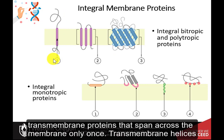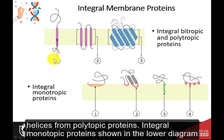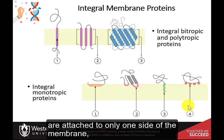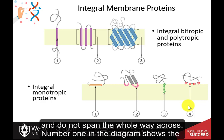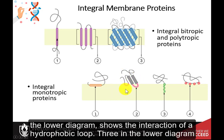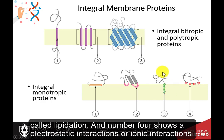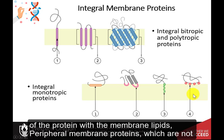Bitopic proteins are transmembrane proteins that span across the membrane only once. Transmembrane helices from these proteins have significantly different amino acid distributions compared to polytopic proteins. Integral monotopic proteins are attached to only one side of the membrane and do not span the whole way across. Their interactions include amphipathic alpha helices parallel to the membrane plane, hydrophobic loops, covalently bound membrane lipids (lipidation), and electrostatic or ionic interactions with membrane lipids.